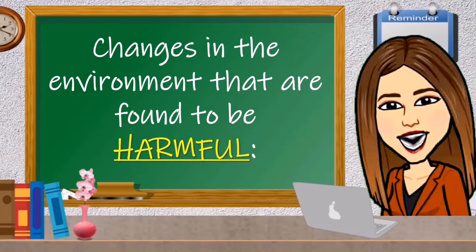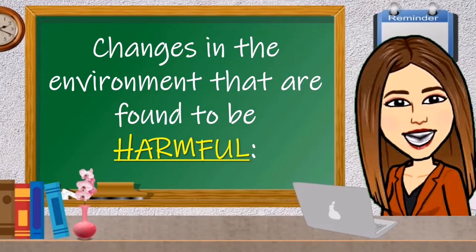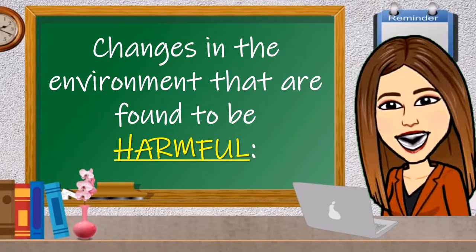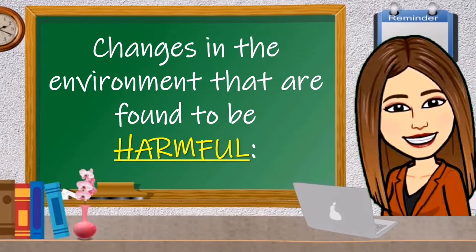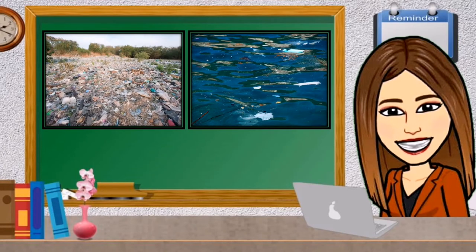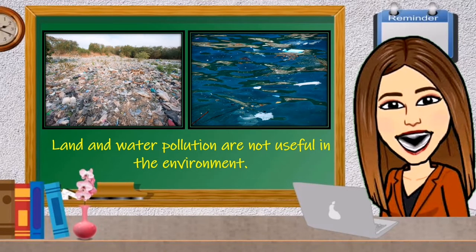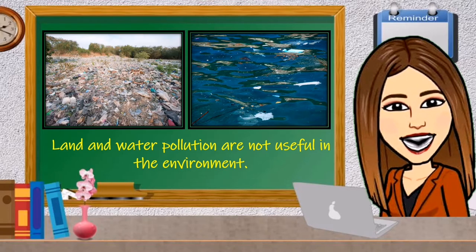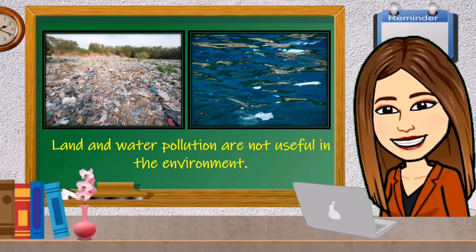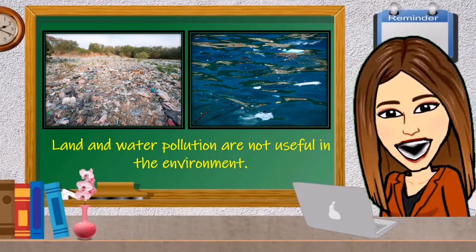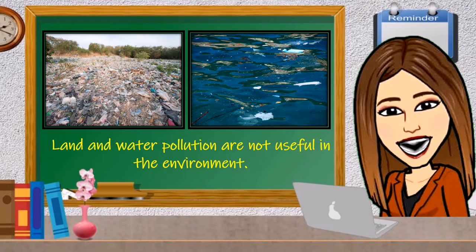There are interactions that lead to changes in the materials found in our home and in our environment. Let's identify the changes in the environment that are found to be harmful. Land and water pollution are not useful in the environment. When land or bodies of water are dumped with garbage of any kind, such as empty bottles, plastics, toxic waste, chemicals from the factories, and others, the land and bodies of water become polluted.